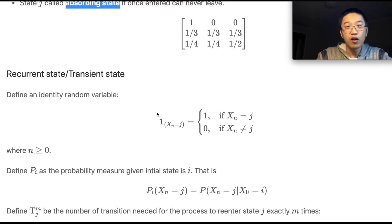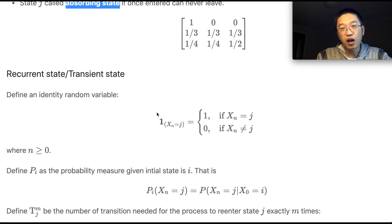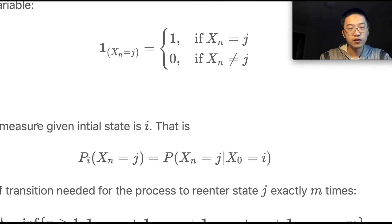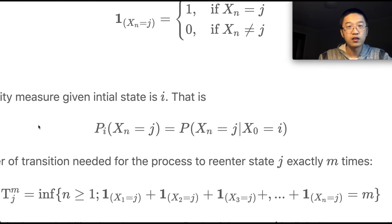With probability p of going left and 1−p of going right, how do we know if it's recurrent or transient? Let's find out. Define a sequence of indicator random variables: the nth indicator value is 1 if X_n equals j, otherwise it's 0. Define P_i as the probability measure given initial state i — that is, the conditional probability of X_n equal to j given X_0 equal to i.